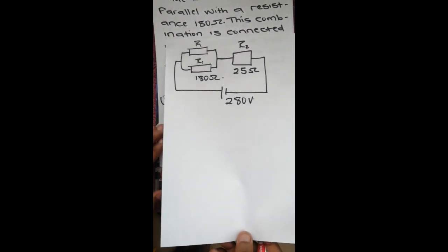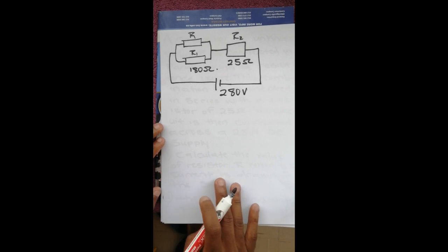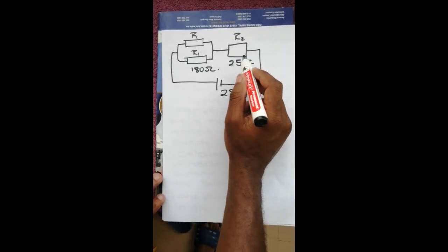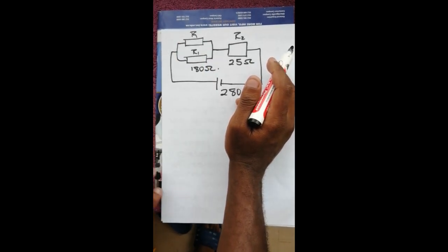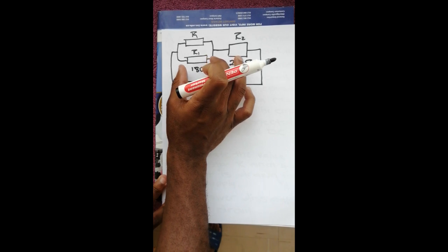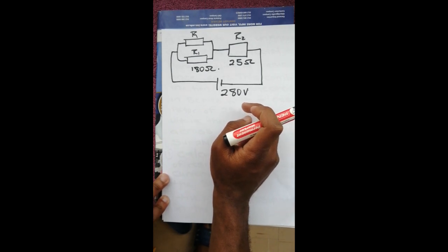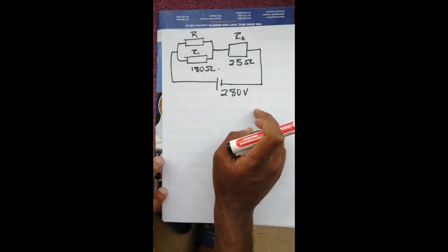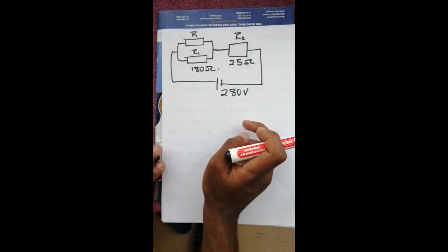To calculate the unknown resistance, there are different approaches we can use. We will calculate the voltage across R2, and after getting that we can get the voltage across the parallel branch. After doing that we can get the current passing through R1, and get the current passing through R from the total current. Using the current and the voltage across R, we can then calculate R.